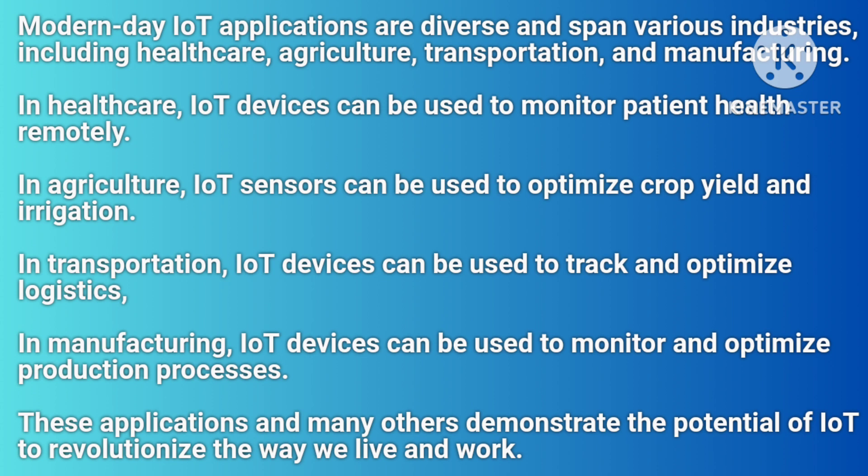In healthcare, IoT devices can be used to monitor patient health remotely. In agriculture, IoT sensors can be used to optimize crop yield and irrigation. In transportation, IoT devices can be used to track and optimize logistics. In manufacturing, IoT devices can be used to monitor and optimize production processes.